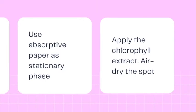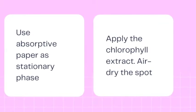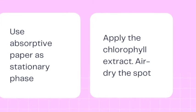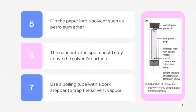Third, the chlorophyll extract is then applied repeatedly to form a fine concentrate spot on the starting line drawn earlier on one edge of the paper. Fourth, the spot is then air dried. Fifth, this chlorophyll spotted end of the chromatography paper is then dipped into a suitable solvent such as petroleum ether.